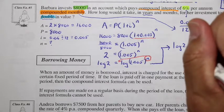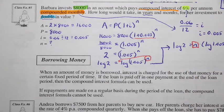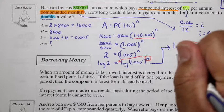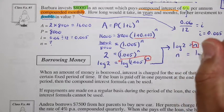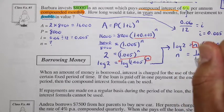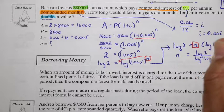Well, trying to isolate n here, n times this value is equal to log 2. So we can say n is equal to log 2 divided by log of 1.005.